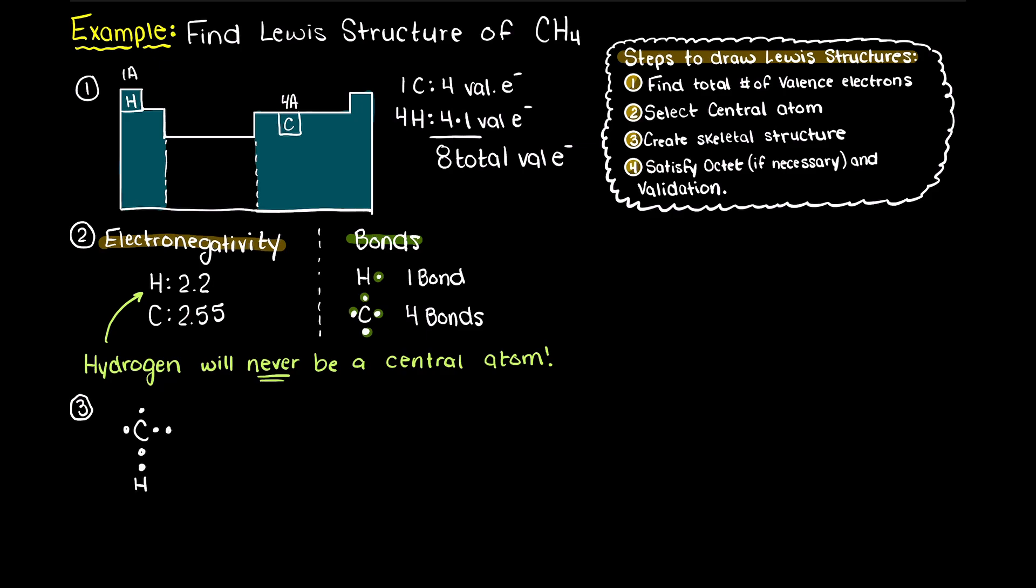Now that we know our central atom, we need to create a skeletal structure of our compound. So let's place our carbon atom in the center and our 4 hydrogen atoms all around our carbon, and add in our valence electrons for each atom. Now let's place in our relevant covalent bonds to connect all of our atoms. And as we no longer have any unpaired electrons left, we can move on.